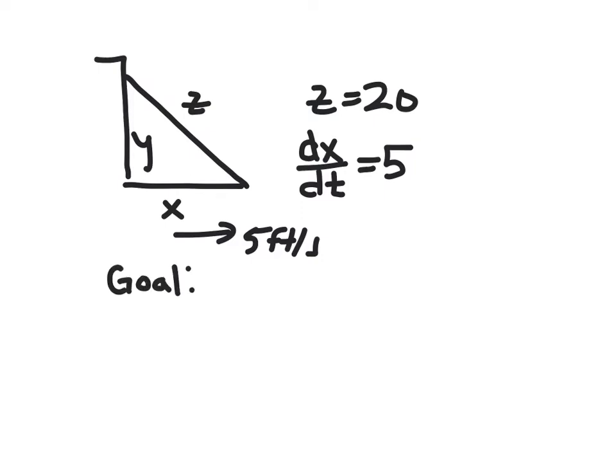And then what's our goal? Our goal is to find the rate that the top is moving down. So we want to find dy/dt at one specific moment in time. We want to know that when x is 12, or the distance from the wall on the bottom is 12.